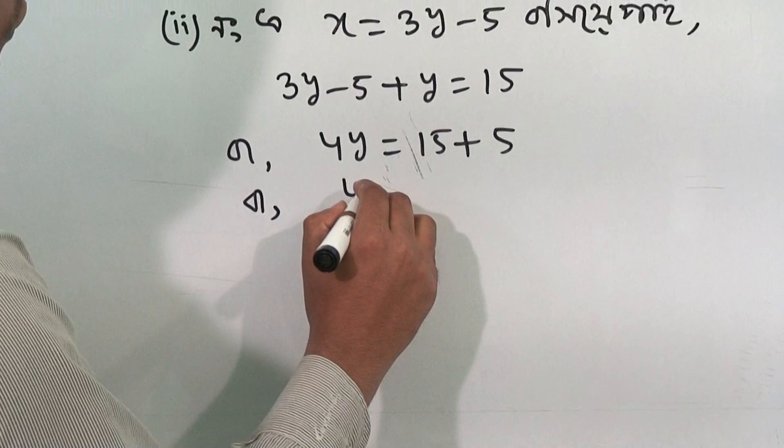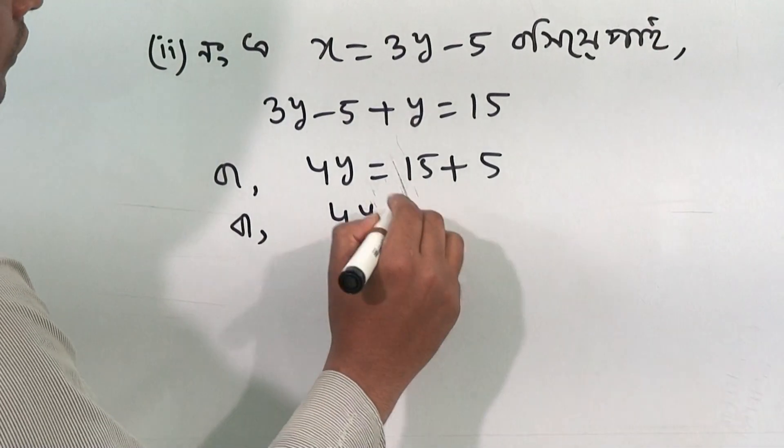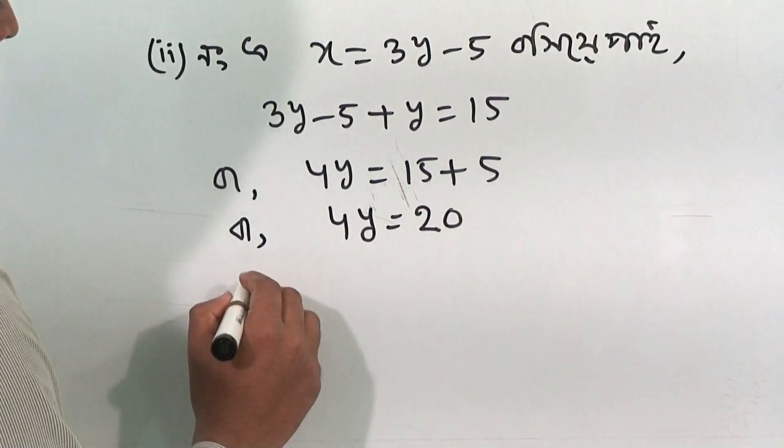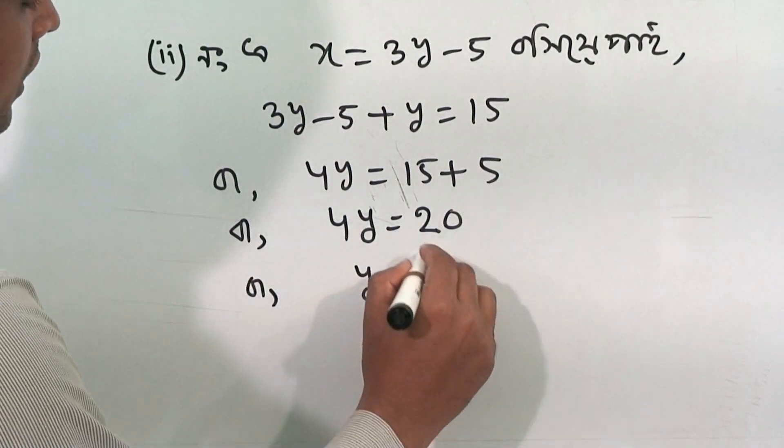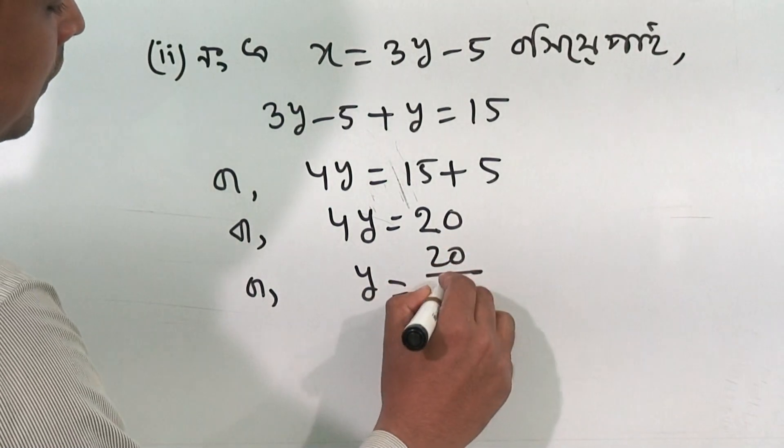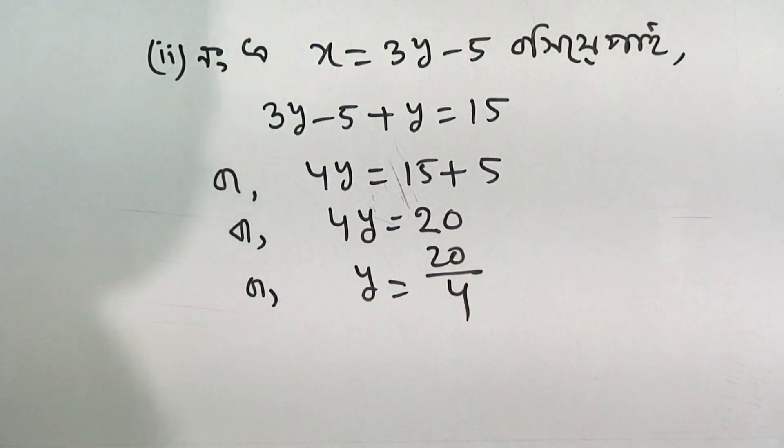Solving the equation: 2y equals 20 divided by 5, giving 3y equals 4, and simplifying further we get the value of y.